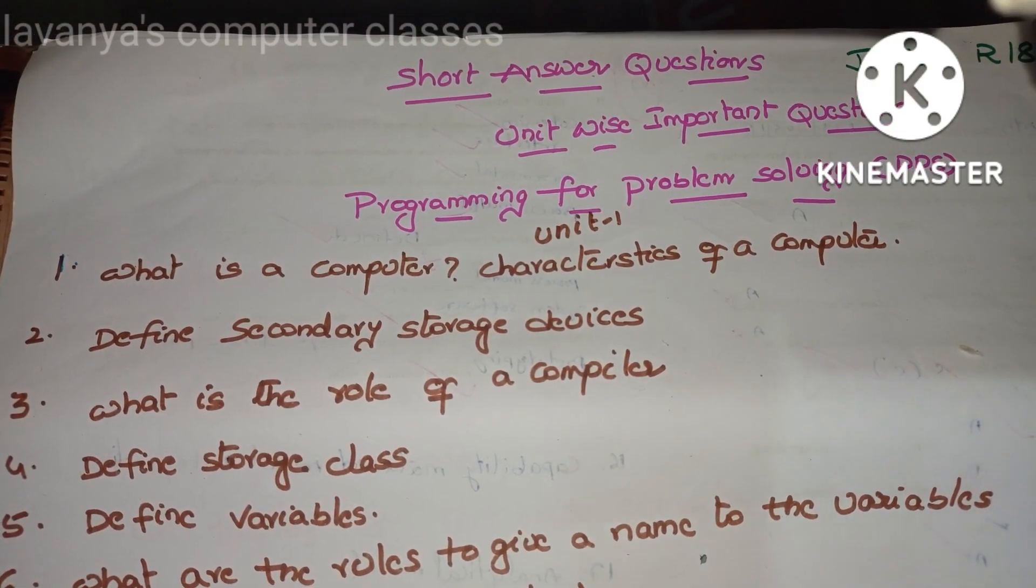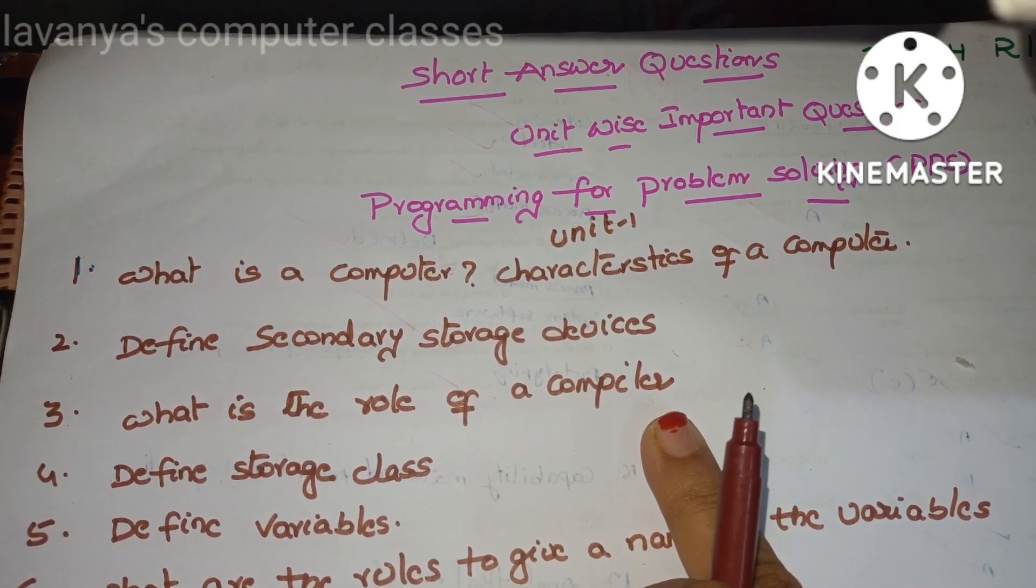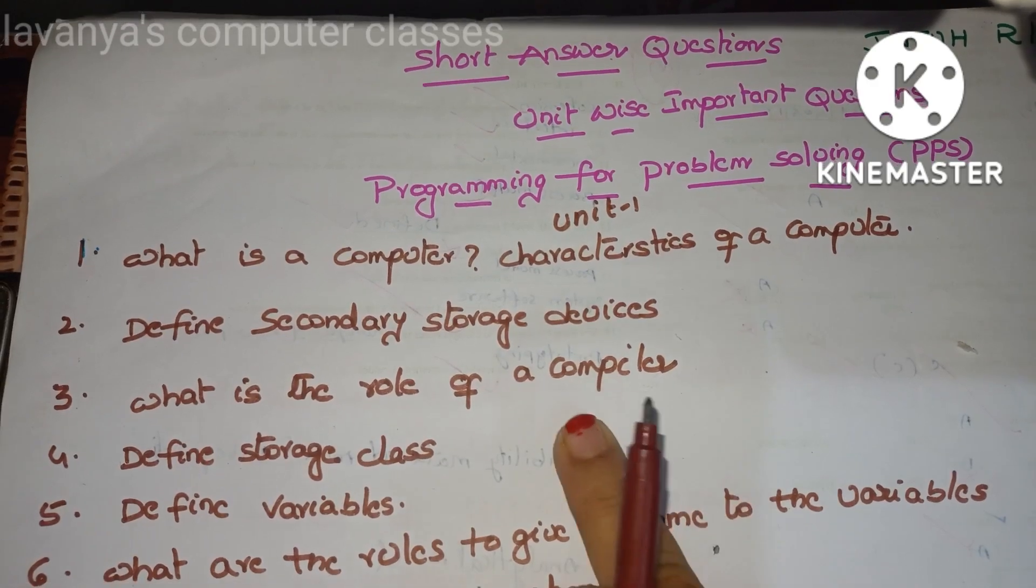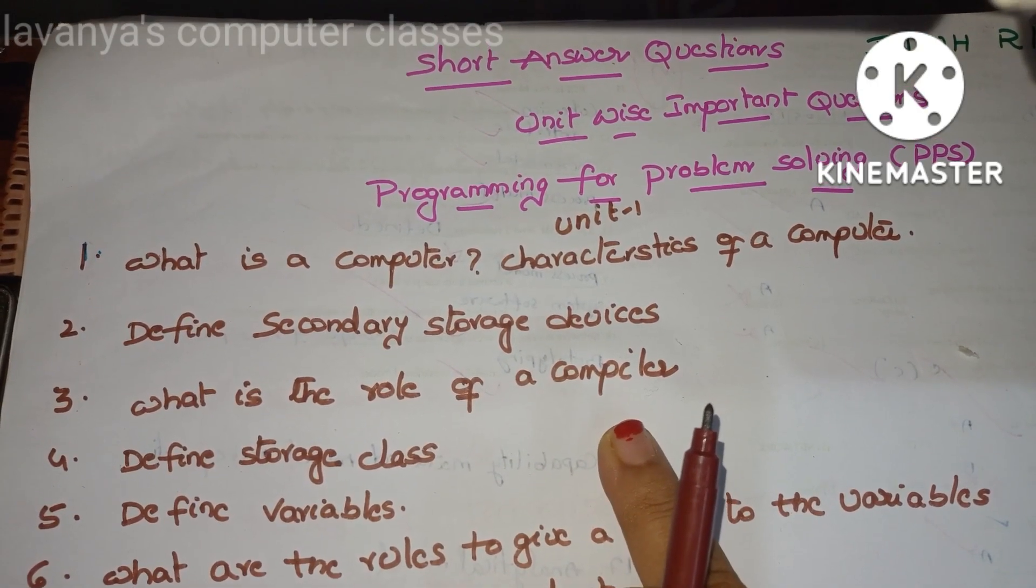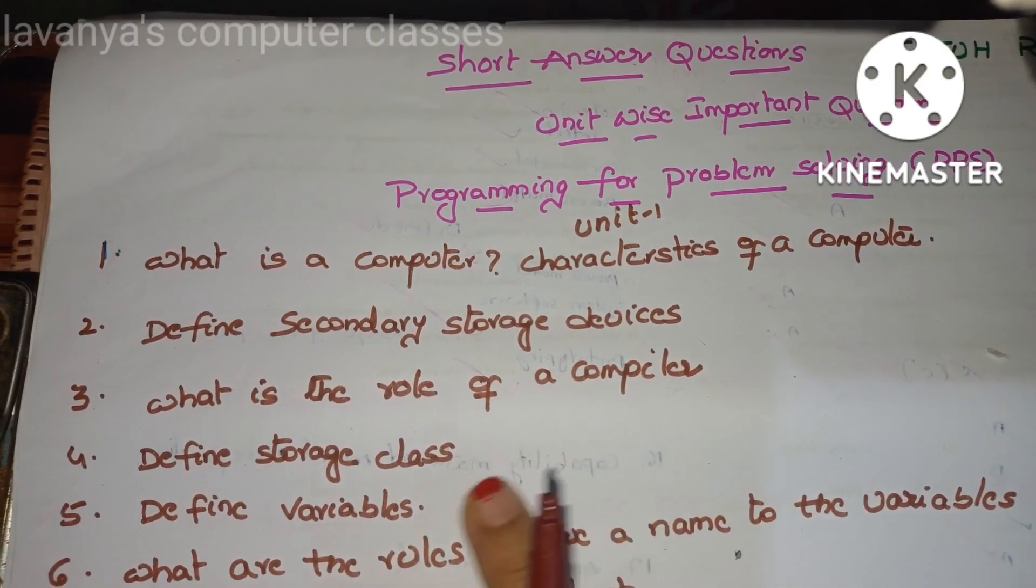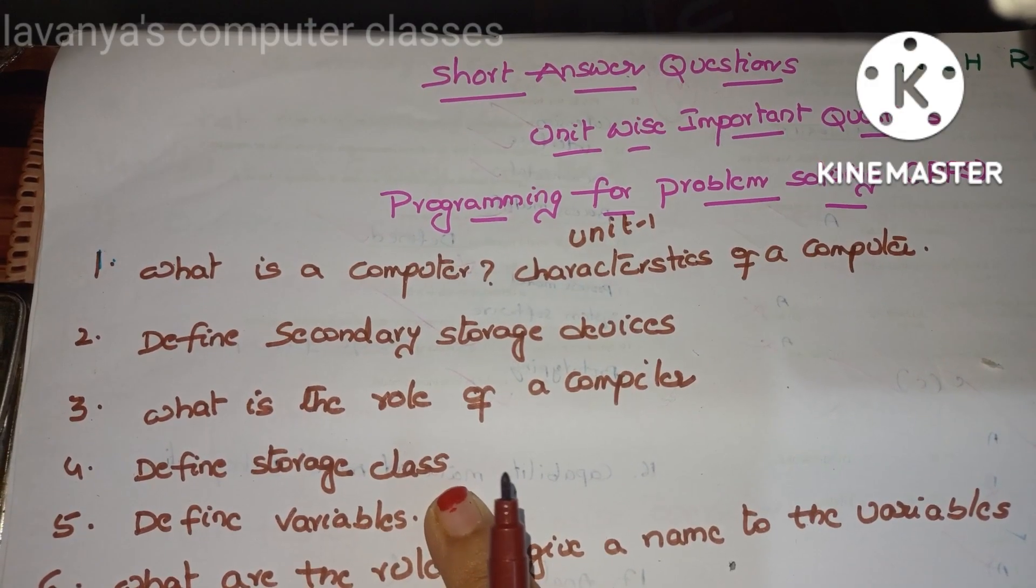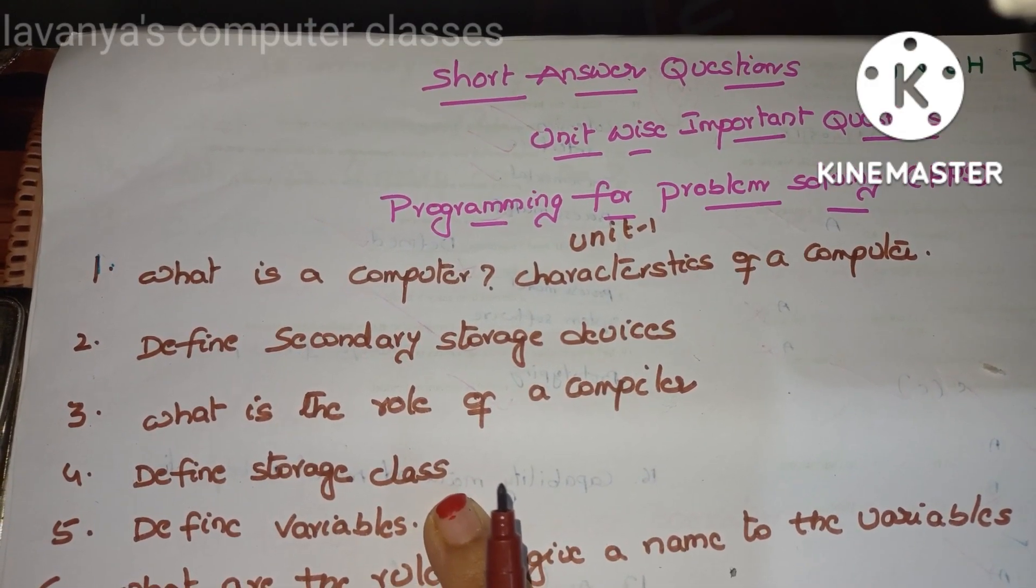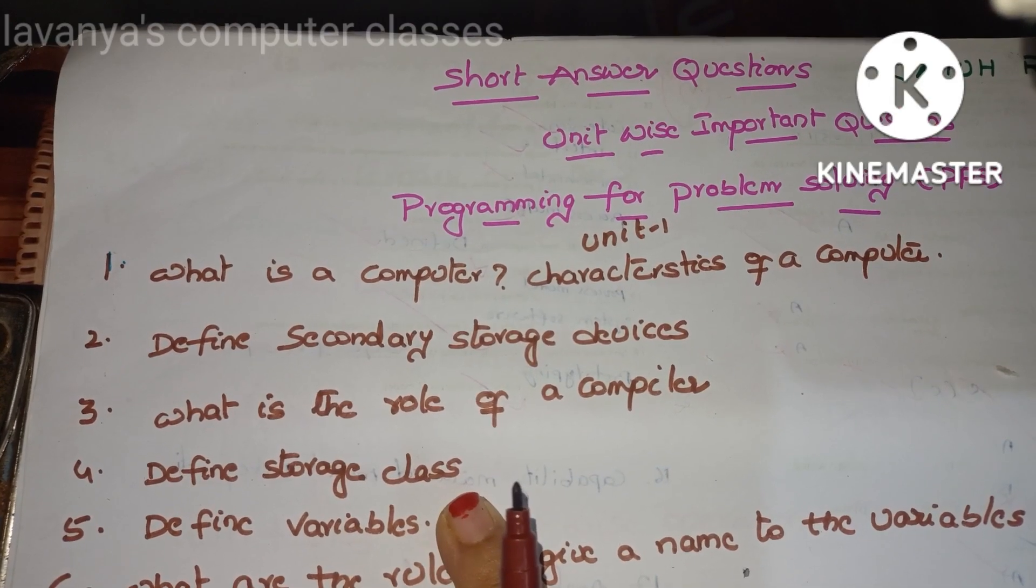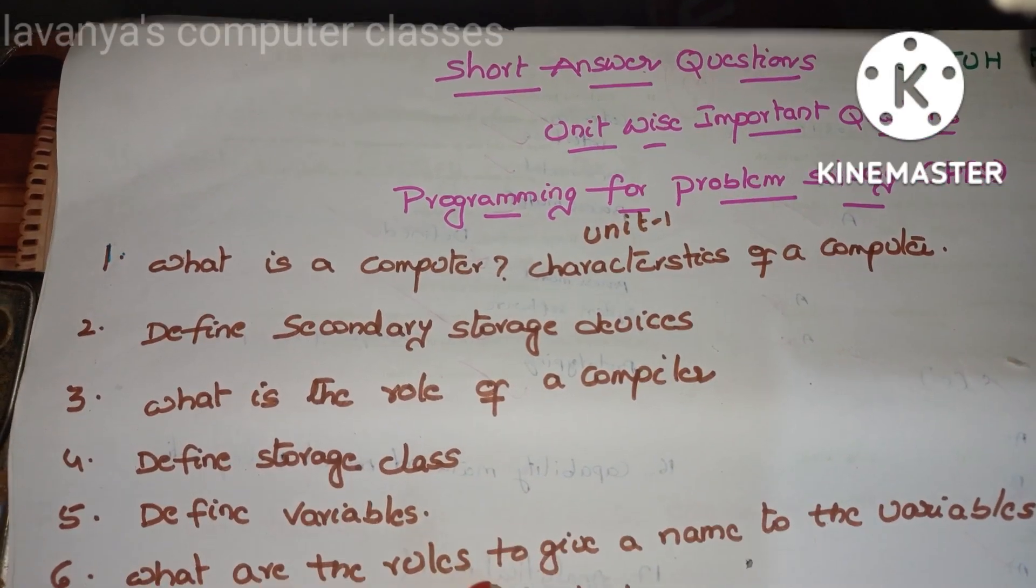Second one is define secondary storage devices, because first unit is introduction of computers and up to loop statements. Third question is what is the role of a compiler? Not only role of a compiler, read for assembler and interpreter also. Define storage classes. This means here we have to just write only definition, that's enough because it is a short answer question. What is storage classes? Just name the storage classes: auto, register, static, like that.